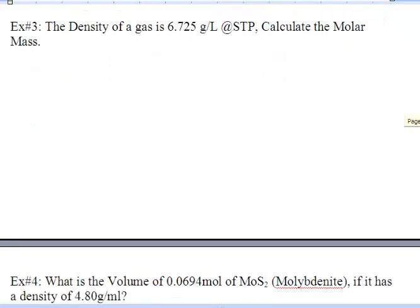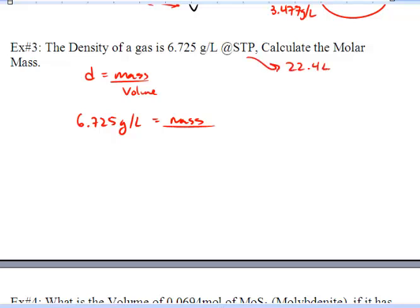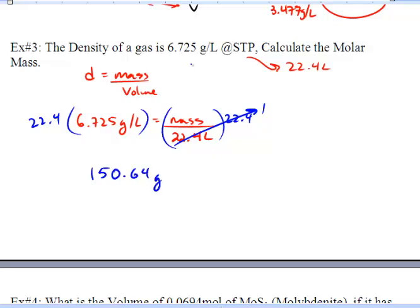We're on to our next example. If the density of a gas is 6.725 grams per liter at STP, calculate the molar mass. So we've been given density and we want to calculate the mass. We've got 6.725 grams per liter and we don't know the mass, but we do know we're at STP. So at STP we automatically think of 22.4 liters that it occupies. Now we're going to multiply this side by 22.4 to get rid of it. Multiply this side by 22.4. Those cancel out to 1 and we're left with 150.64 grams of that specific gas.